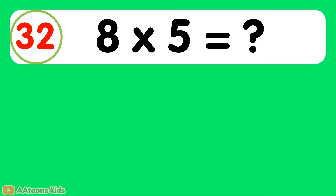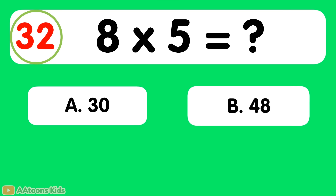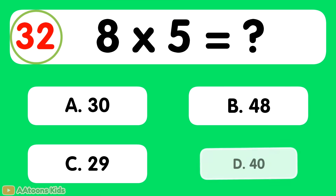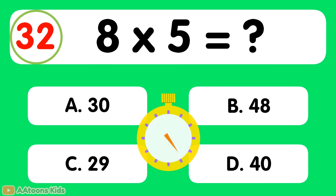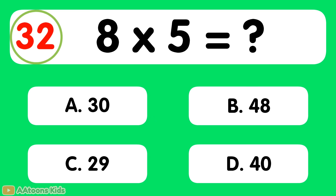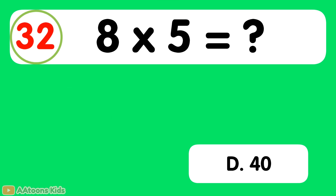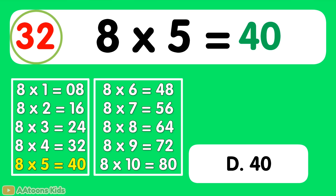8 times 5 is equal to... 40. 8 times 5 is 40.